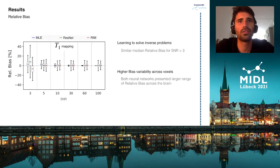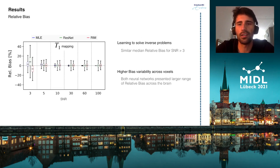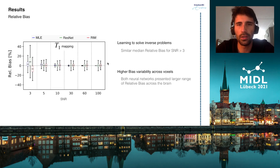This graph shows the relative bias of the T1 estimates — the MLE shown in blue, the ResNet in green, and the RIM in red. For most cases where SNR is higher than 3, all methods produce quantitative maps with comparable median relative bias, but both neural networks displayed a larger range of values than the MLE.